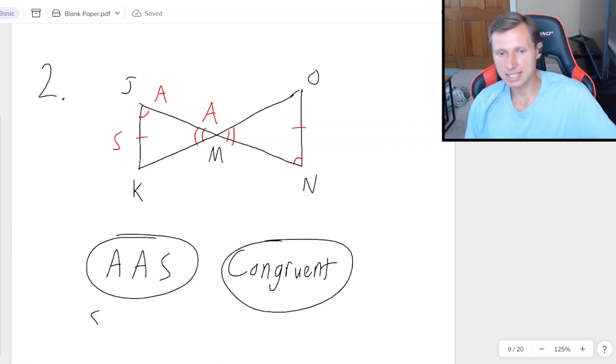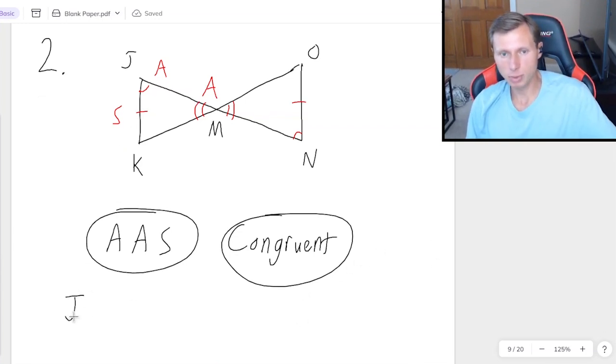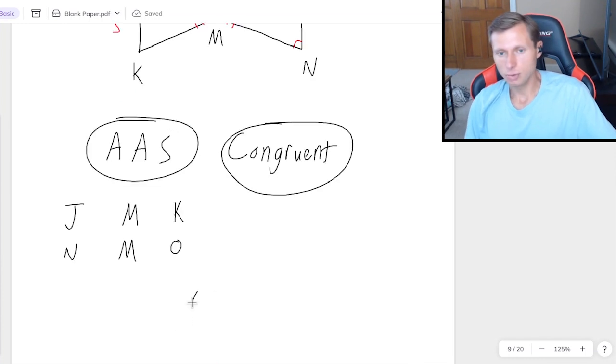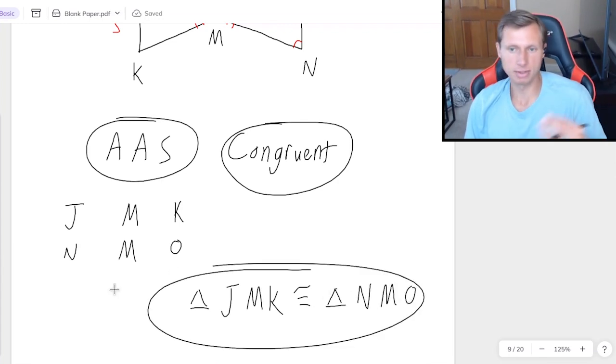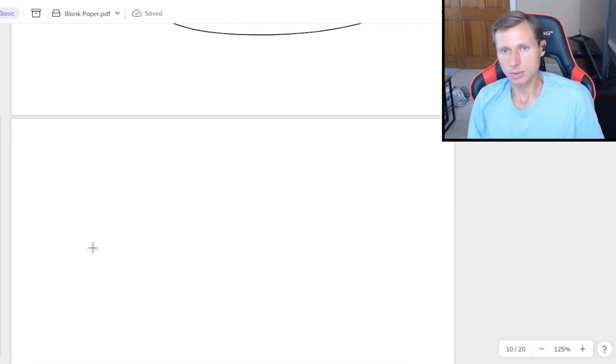By the way, if you ever wrote S-A-A, I believe you would get points off for that. Because even though it is a side angle angle, that's not what we call it. We call it A-A-S. So at that point, it really depends on how your teacher is feeling that day, whether or not they take points off for you. But then how would I say that the triangles are congruent? I would say J matches up with N, M matches up with M itself, and that means K has to match up with O. So for instance, I'll say triangle J-M-K is congruent to triangle N-M-O. And that's one of the many different combinations that would work here. So that's it for that one.